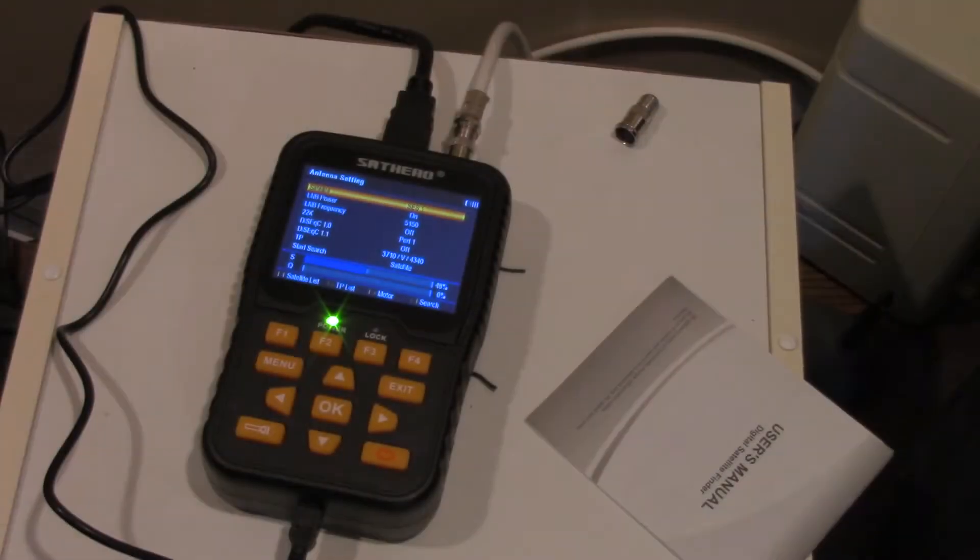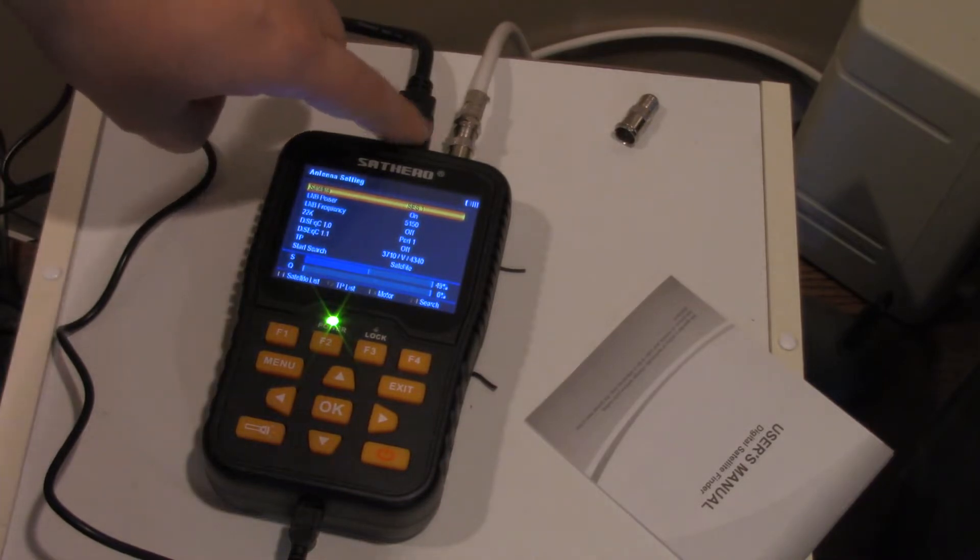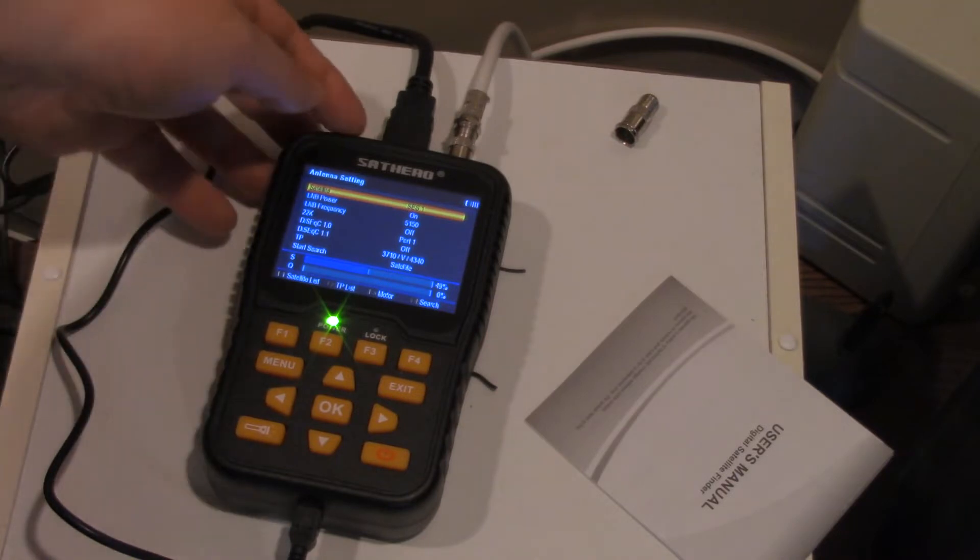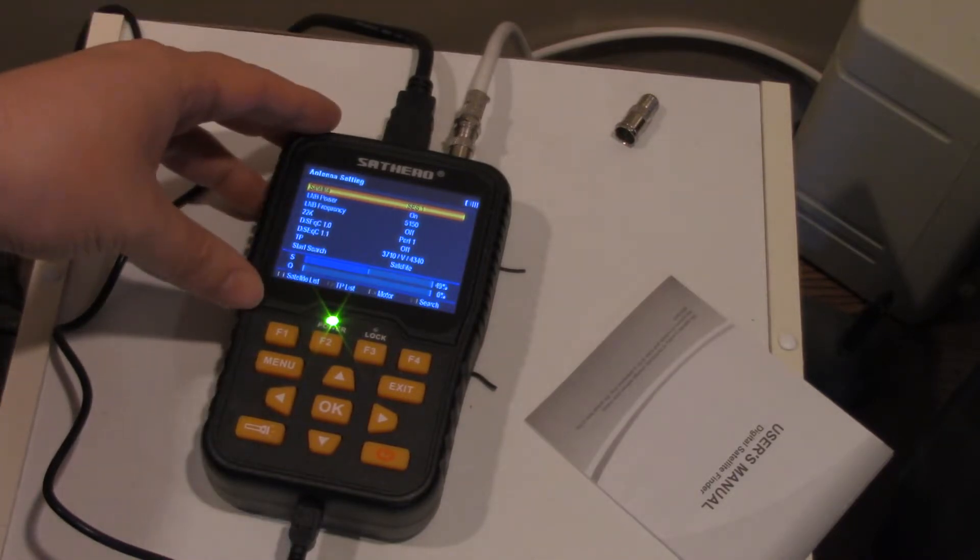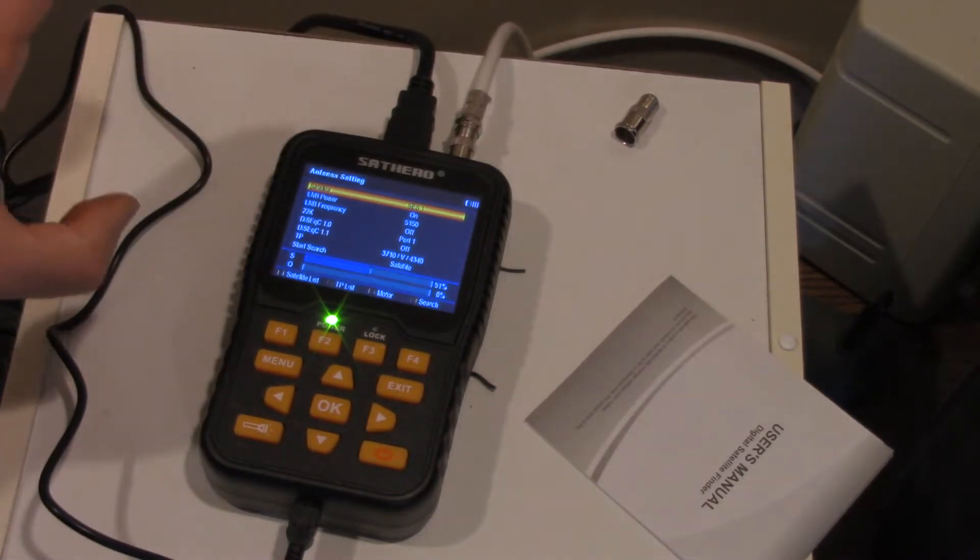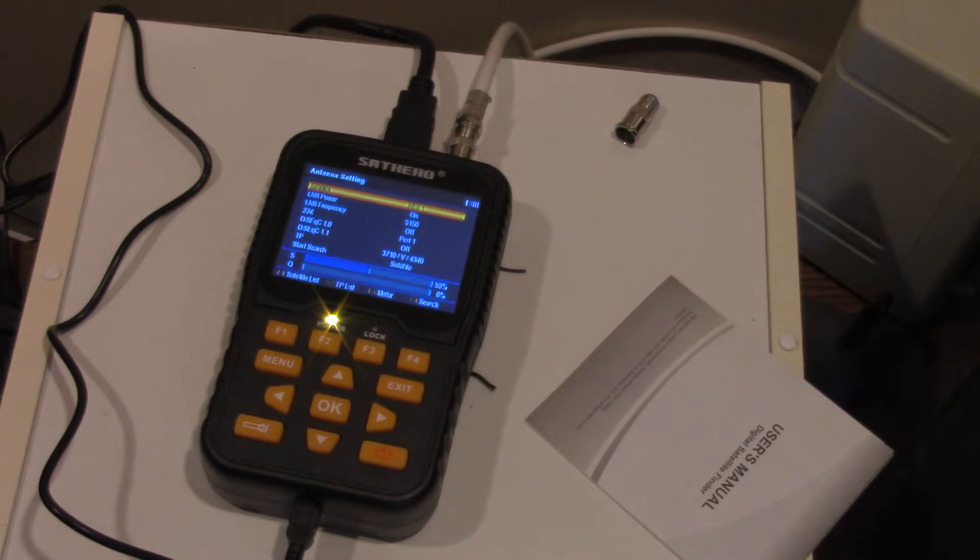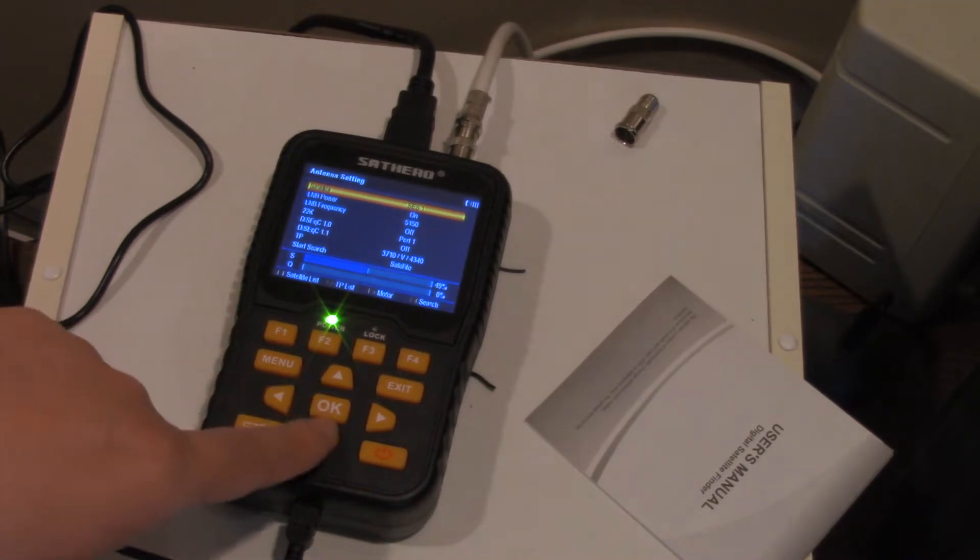Alright, so I got the unit connected to my C-Band dish. It has the HDMI output here, which I actually have hooked up to a monitor. So if you have access to a monitor, this thing actually can act like a satellite receiver. I lost the signal there. Oh dear.